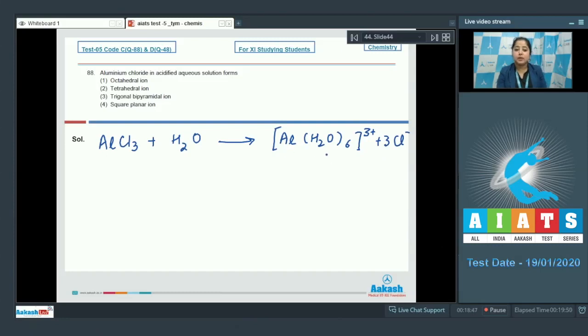It is very clear that in this complex, the coordination number of aluminum is 6, the hybridization of aluminum is sp3d2, and the geometry of the complex is octahedral.